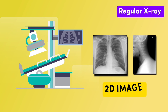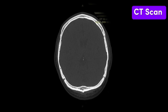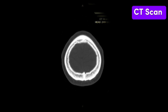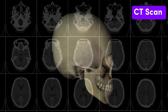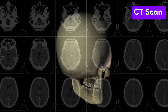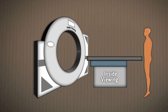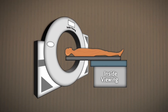But unlike a regular x-ray, which gives you a flat 2D image, a CT scan creates a 3D image by combining multiple x-ray images from different angles. Here is how it works: you lie down on a table that slides into a large donut-shaped machine.